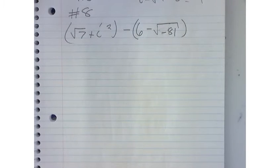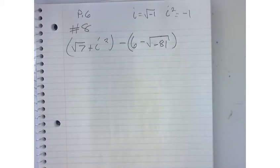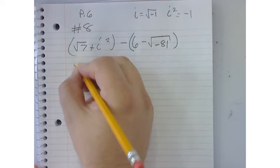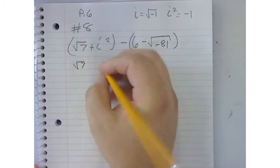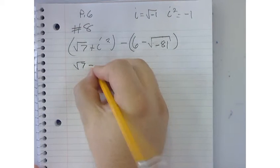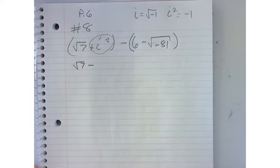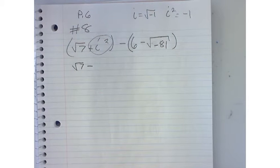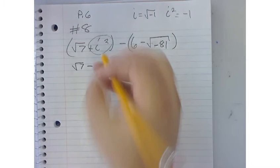So in my very next step, I'm going to start replacing some things. So this becomes square root of 7, and my positive i squared is really minus 1, isn't it? So I'm going to replace that with negative 1.